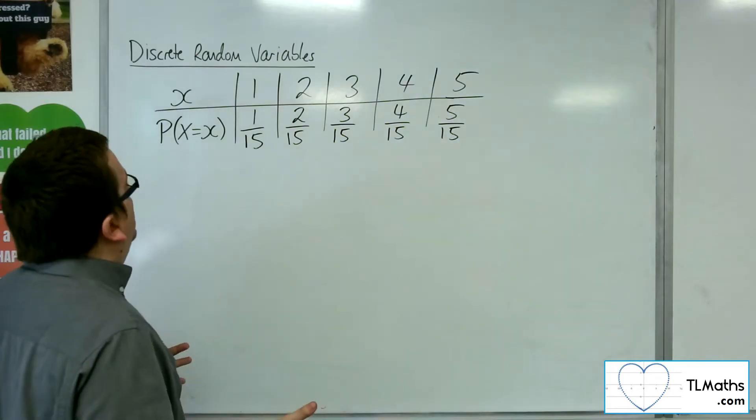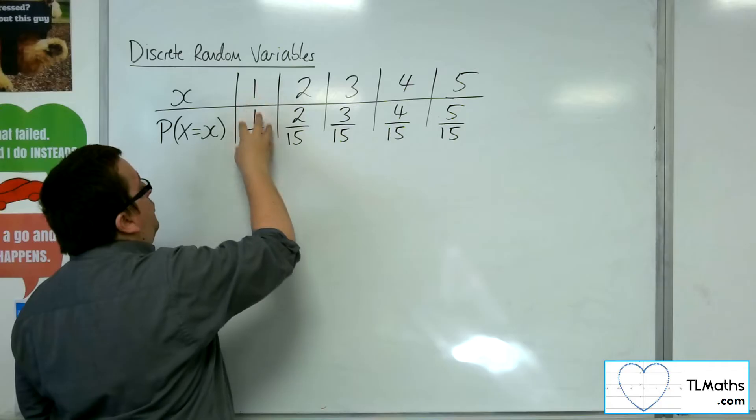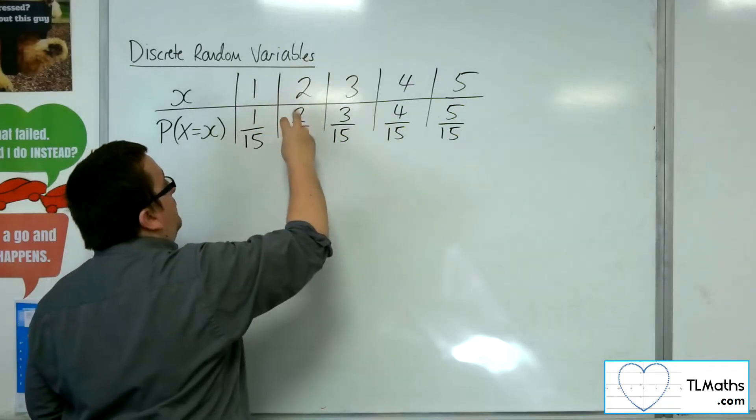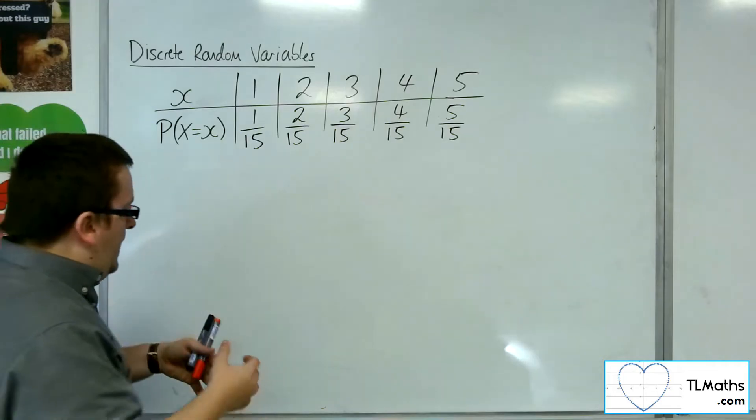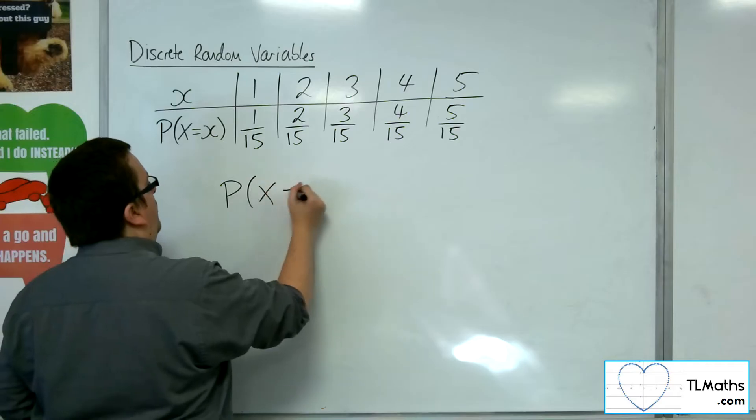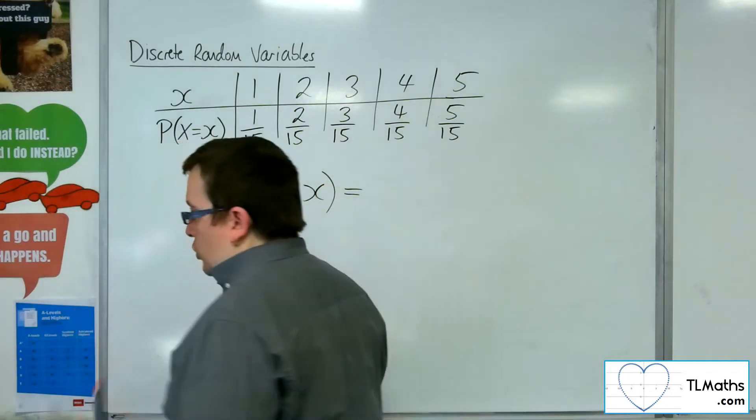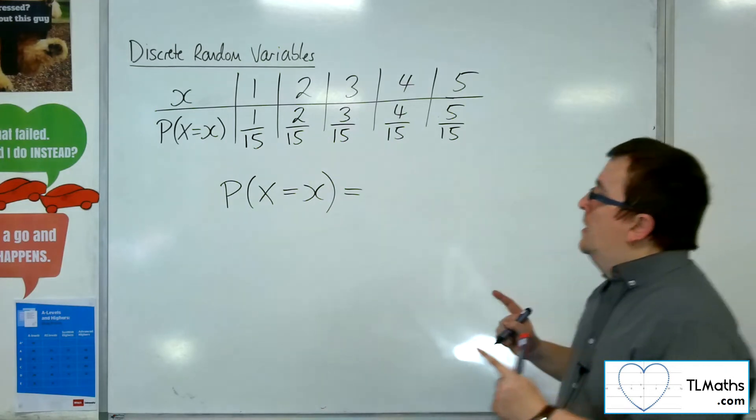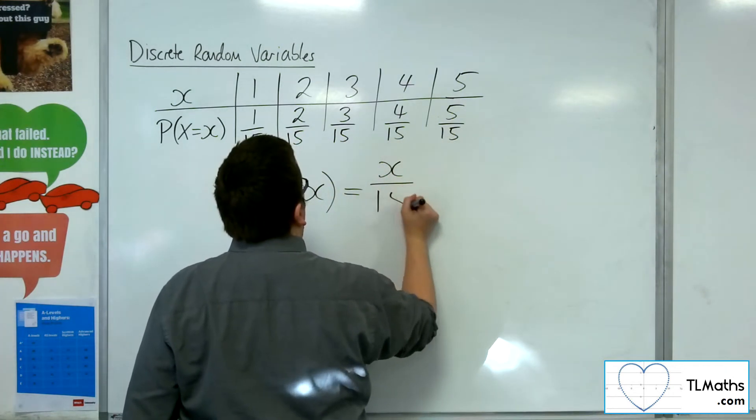What you might notice is that in each of these cases, we've got one over fifteen. So probability of getting one is one over fifteen, probability of getting two is two over fifteen, and so on. So what we could say is that the probability of x being equal to x is actually the x value over fifteen.